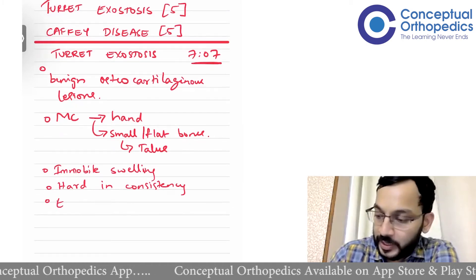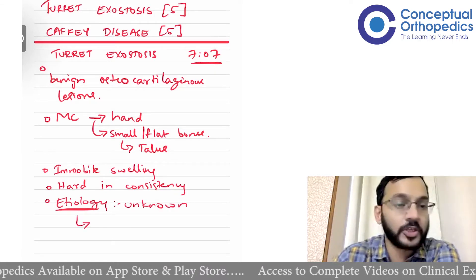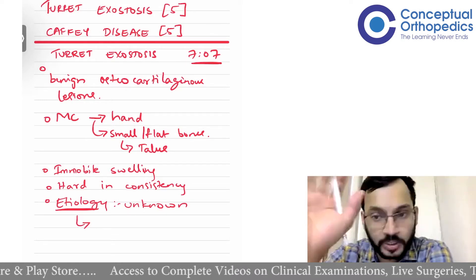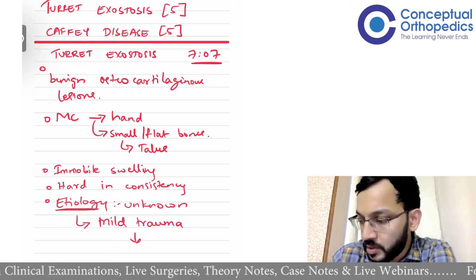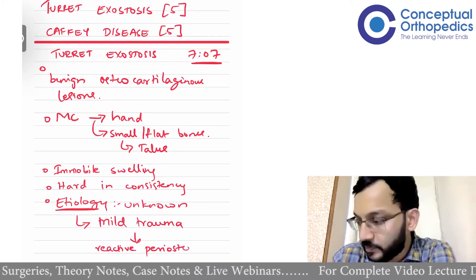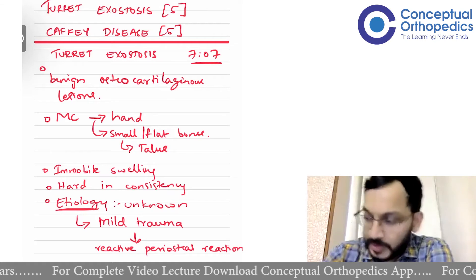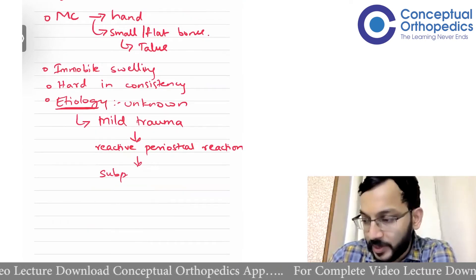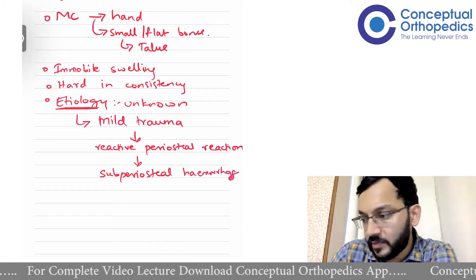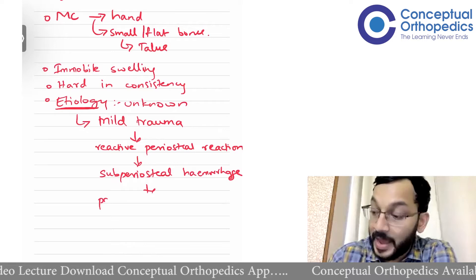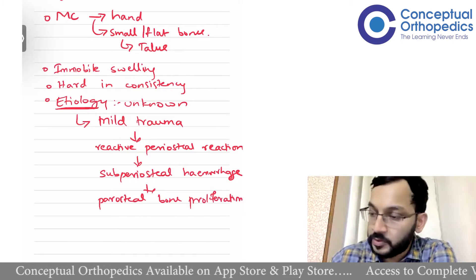Why do they occur? The etiology is unknown, but the most probable cause is a relatively mild trauma which leads to a reactive periosteal reaction. This periosteal reaction leads to a subperiosteal hemorrhage, which leads to the osteocartilaginous lesion and ultimately to paraosteal bone proliferation.